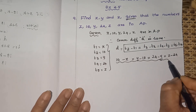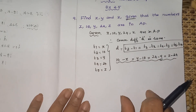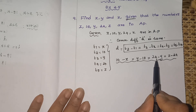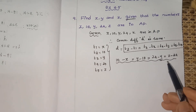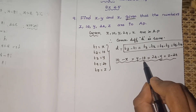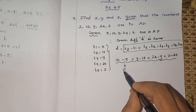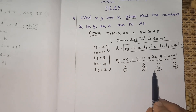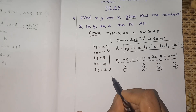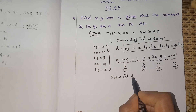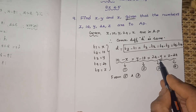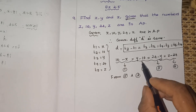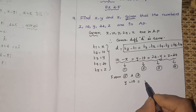Since all are equal, we can take two equations at a time. Label them: (1) 10 minus x, (2) y minus 10, (3) 24 minus y, (4) z minus 24. To find y, we take equations (2) and (3) — both have only one variable y. So we equate: y minus 10 equals 24 minus y.